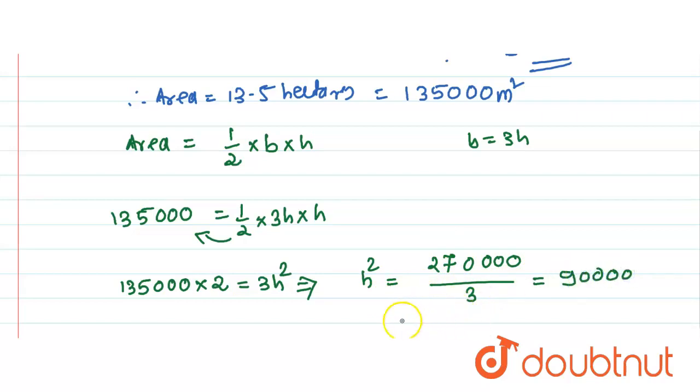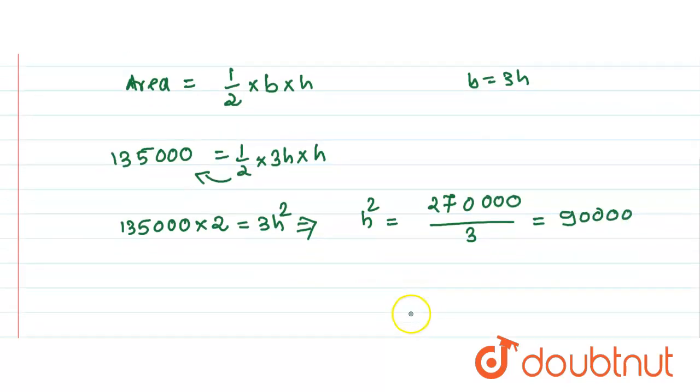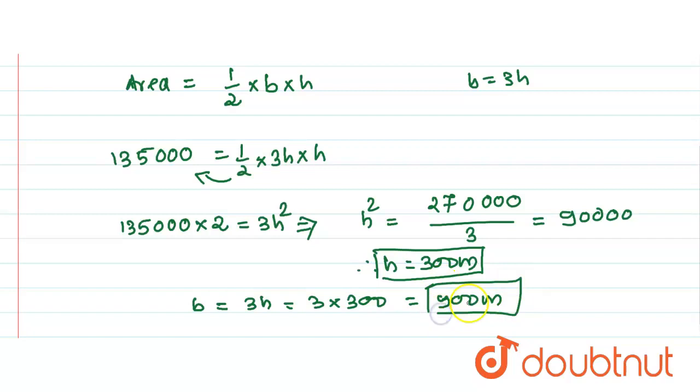If we take the square root, then H is equal to 300 meter. So this is the value of height. And what is base? B is equal to 3 times H, so this is 3 into 300, which equals 900 meter. So these are the base and height for the triangular field.